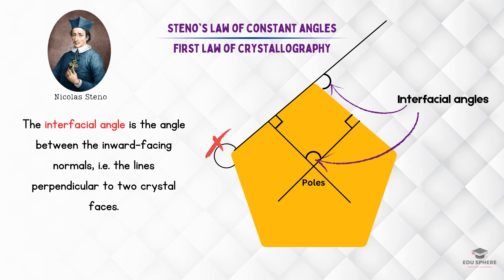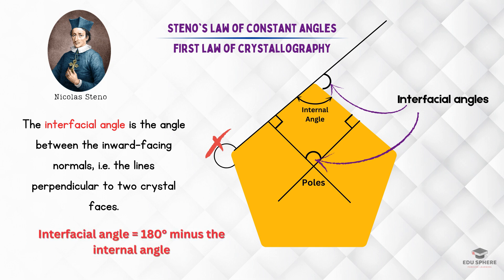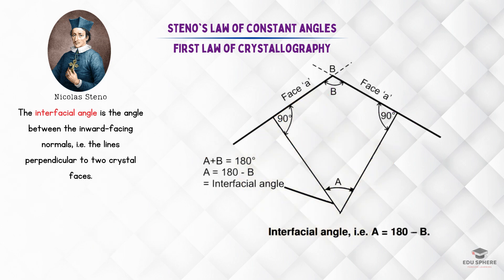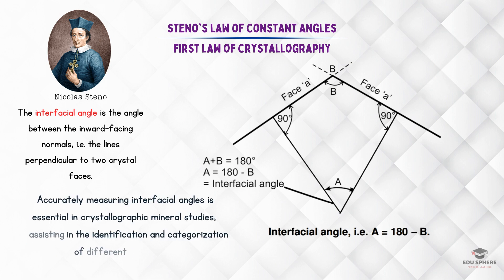Instead, it relates to the internal structure. Mathematically, it's calculated as 180 degrees minus the internal angle between the two faces. In this figure, the interfacial angle is labeled as A, and it is complementary to the angle B. Do remember that accurately measuring interfacial angles is vital in crystallographic studies of minerals, as it helps us to identify and classify different minerals.